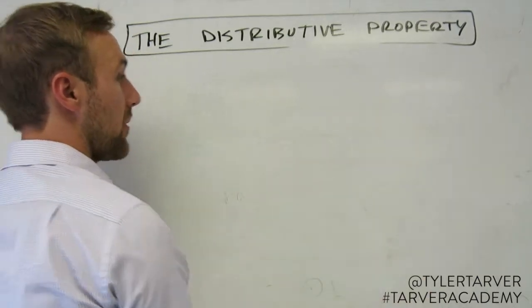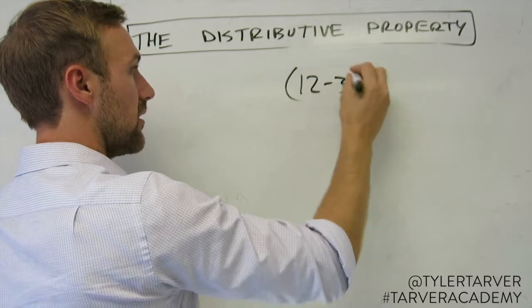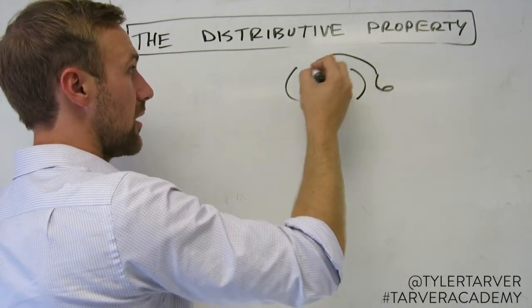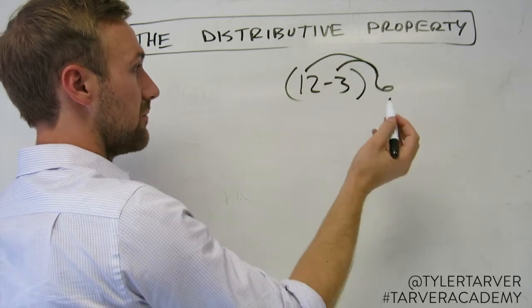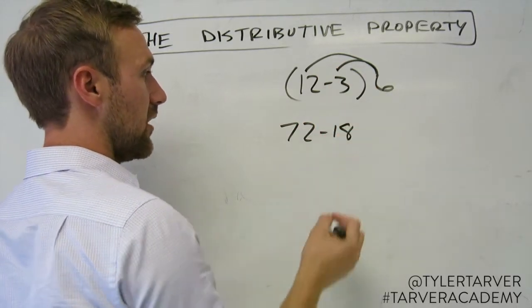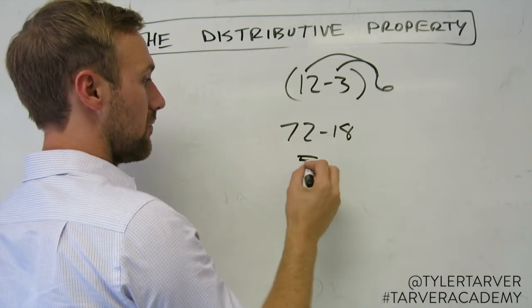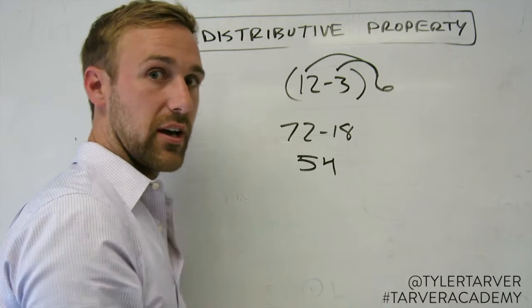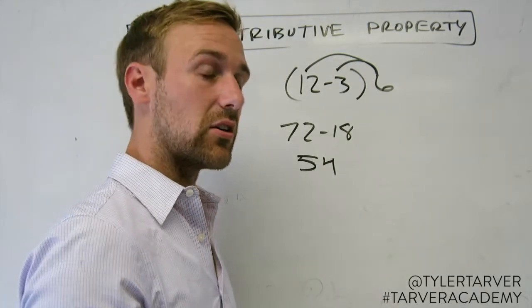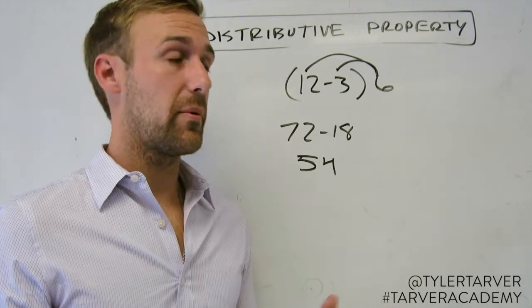Let's look at another one. The distributive property also works going backwards. So say you have 12 minus 3, and you've got a 6 there. Same thing, except you're coming back this way. Multiply there, multiply there. So that'd be 72 minus 18, then you subtract. That'd be 54. And that's the distributive property.